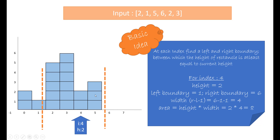If we go to the right and see where we get an index that has a height less than 2, it becomes 6 as 6 is the end of the array. Now that we have the left and right boundary, the area can be found by height times width, where width is right minus left minus 1. So that is 6 minus 1 minus 1 which gives us 4, and the height is 2 which gives us the area as 8.